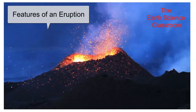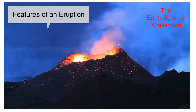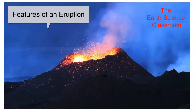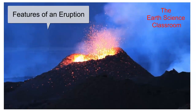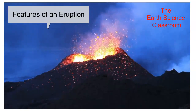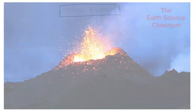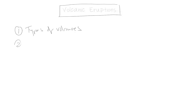Today we're in volcanology, all about volcanoes. We're looking at eruptions and all the features and different components that eruptions include — different volcanoes, different sizes based on the VEI scale. We're going to look at first the types of volcanoes, and then the characteristics and features with a nice flow chart and a nice diagram to discuss.